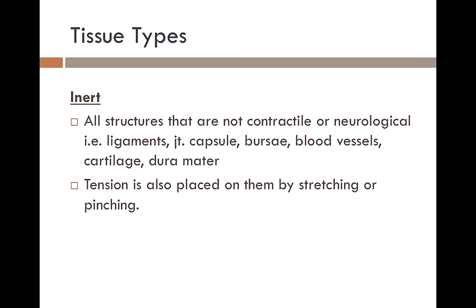Inert tissue refers to all other structures that are not contractile or neurological. For example, ligaments, joint capsule, bursae, blood vessels, cartilage, and dura mater. Tension is also placed on them by stretching or pinching.